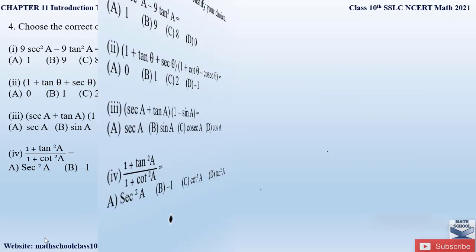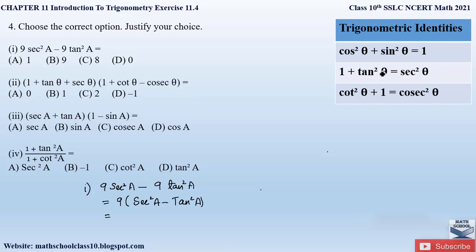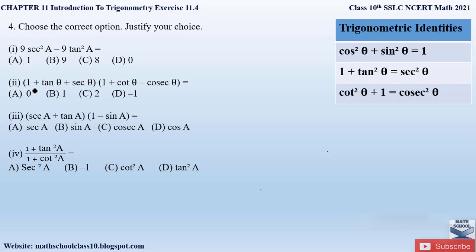The first part of the question is: 9 secant squared A minus 9 tan squared A. We can observe that 9 is common, so we take out 9 outside and we are left with secant squared A minus tan squared A. Using the trigonometric identity, secant squared theta minus tan squared theta equals 1, we apply this here. So 9 into 1 gives us the result 9. The correct option is option B.